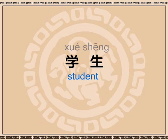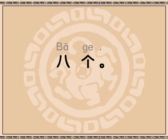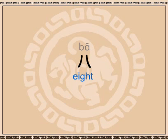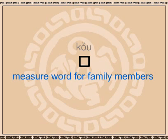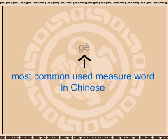So then the guy answers 八个. What does that mean? 八 is the number eight, and 个 is the measure word. Wait, I thought 口 was the measure word for people. Actually, 口 is the measure word for family members. But 个 is one of the most common measure words you will hear in Chinese. You will get the hang of it.